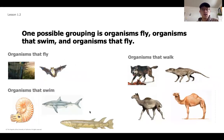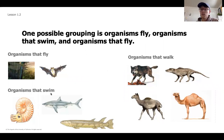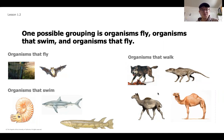Another way you could have sorted them is based on how they move — organisms that fly, organisms that swim, and organisms that walk. You might also note that some of these walk on four legs, since we know some animals like humans walk on two legs.